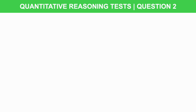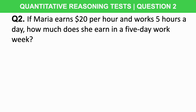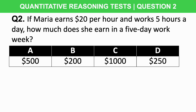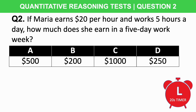Now it's your turn — have a go at this yourself and let me know your answer in the comment section below. I reply to everyone who leaves a comment. Question two: if Maria earns $20 per hour and works five hours a day, how much does she earn in a five-day work week? Is it A) $500, B) $200, C) $1,000, or D) $250? You have 20 seconds to work this out. You should be able to do it without a calculator, but pause the video if you need more time. It's vital that you can do the foundations of these questions correctly, as that will allow you to tackle much more difficult questions later on.